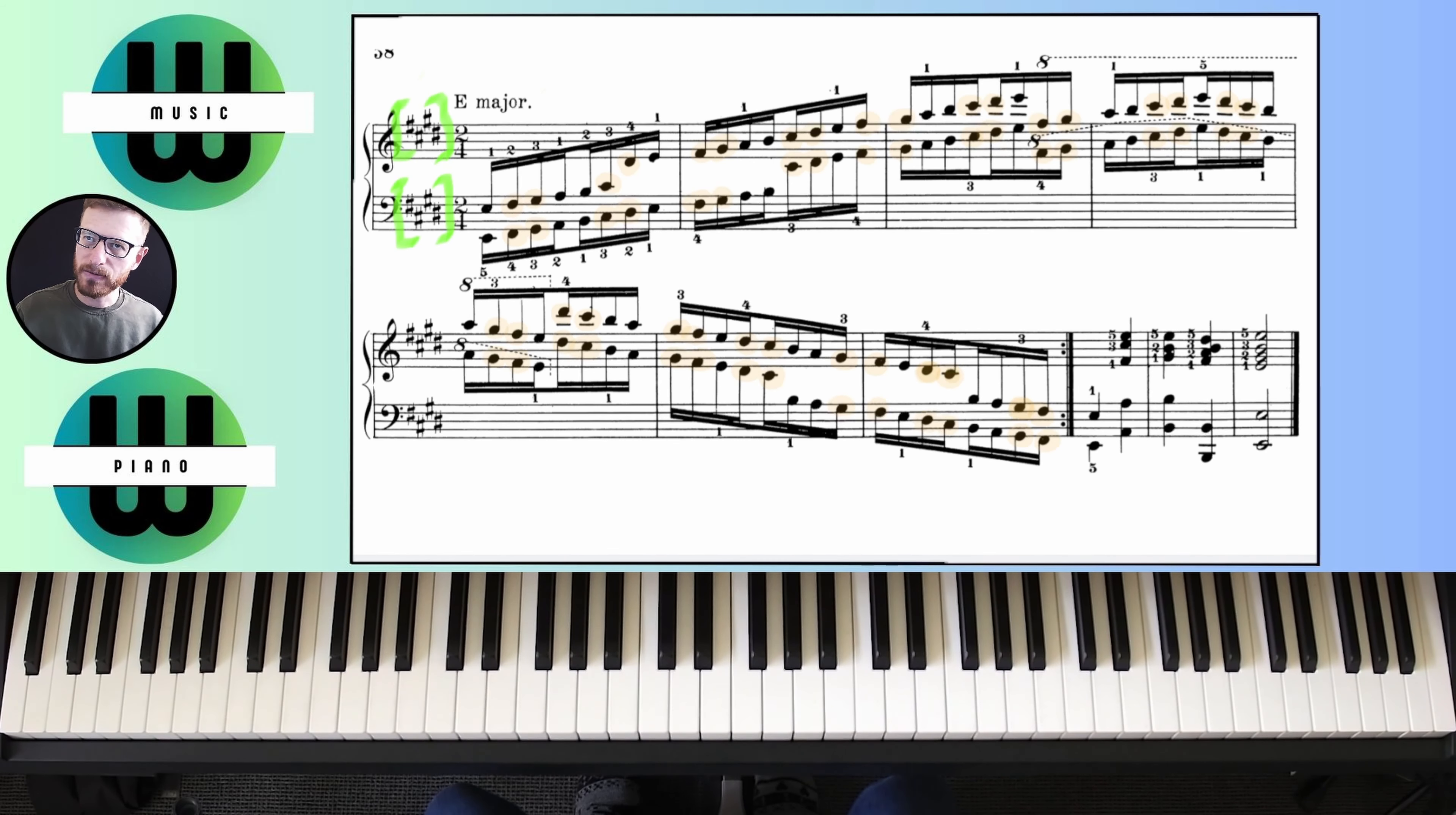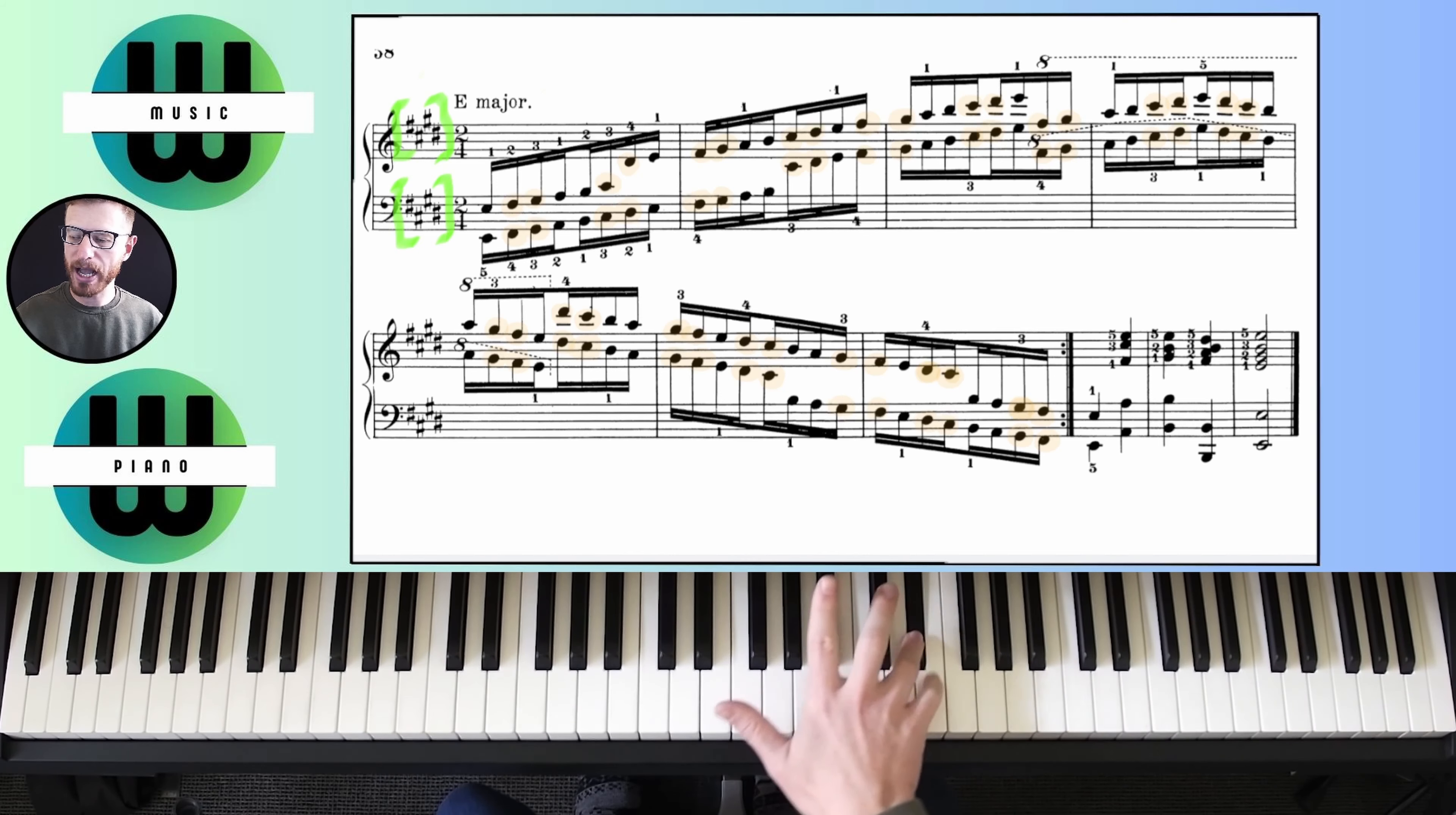Let's get started. First we're going to do the right hand one octave starting on E. We're going to have one, two, and three on E, F sharp, and G sharp. Then I'm going to have one, two, three, four, and five. Look at that standard scale pattern.